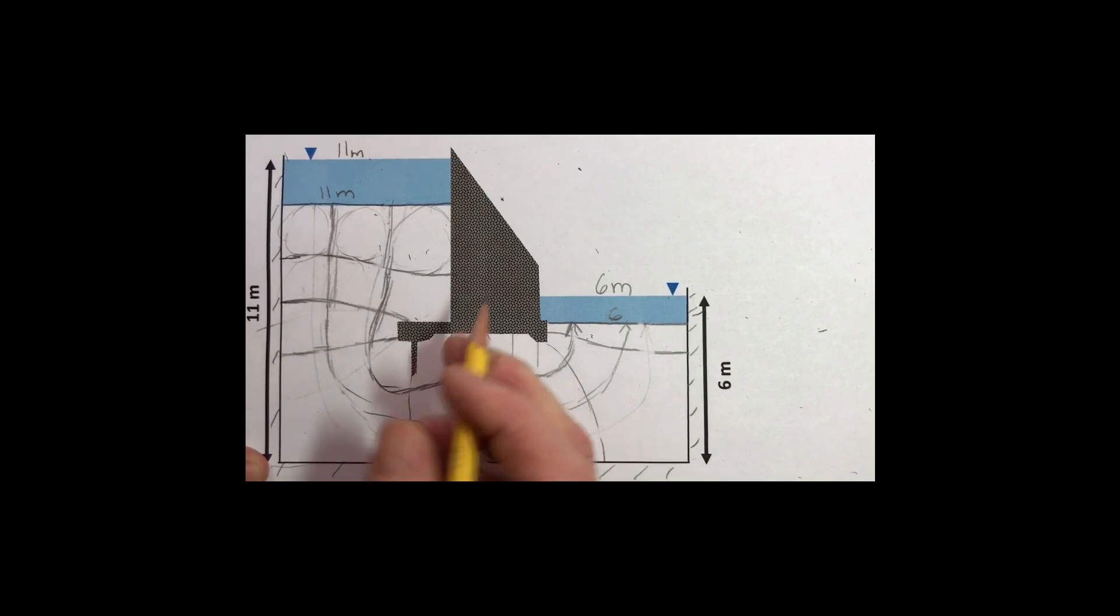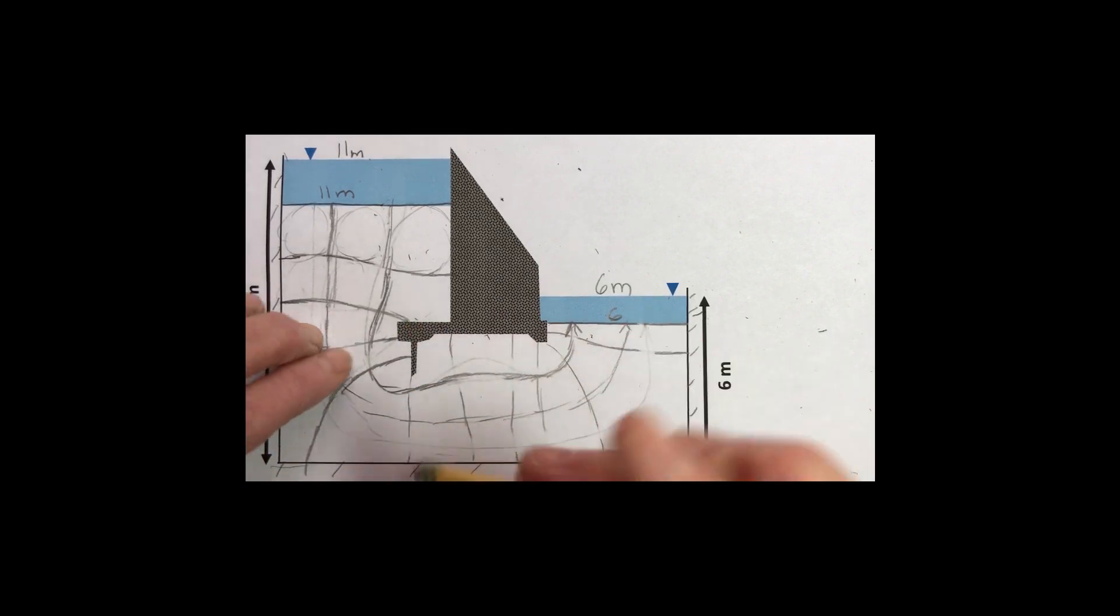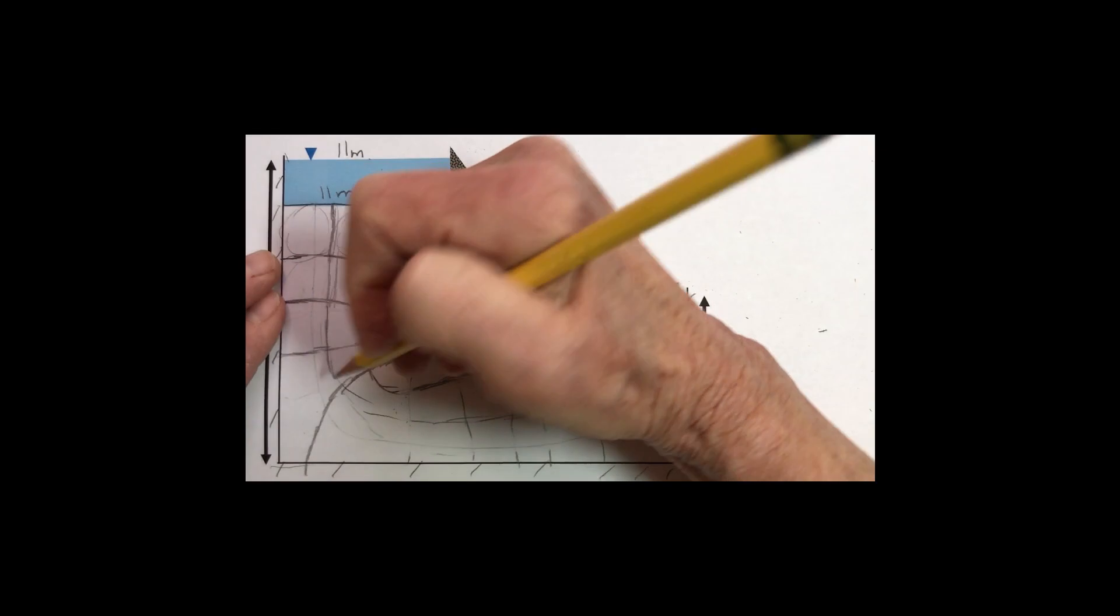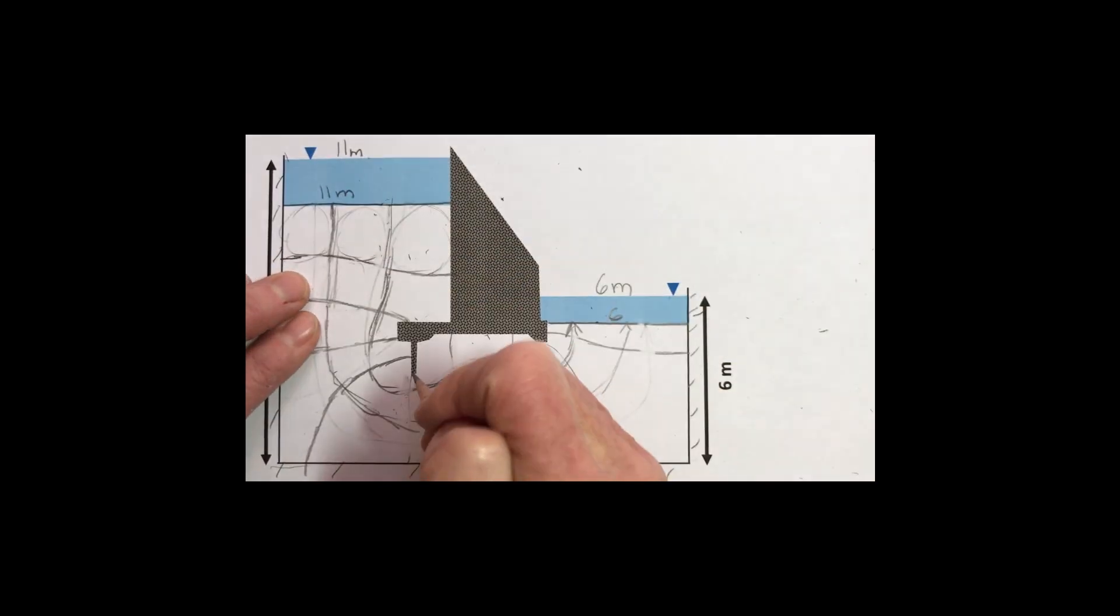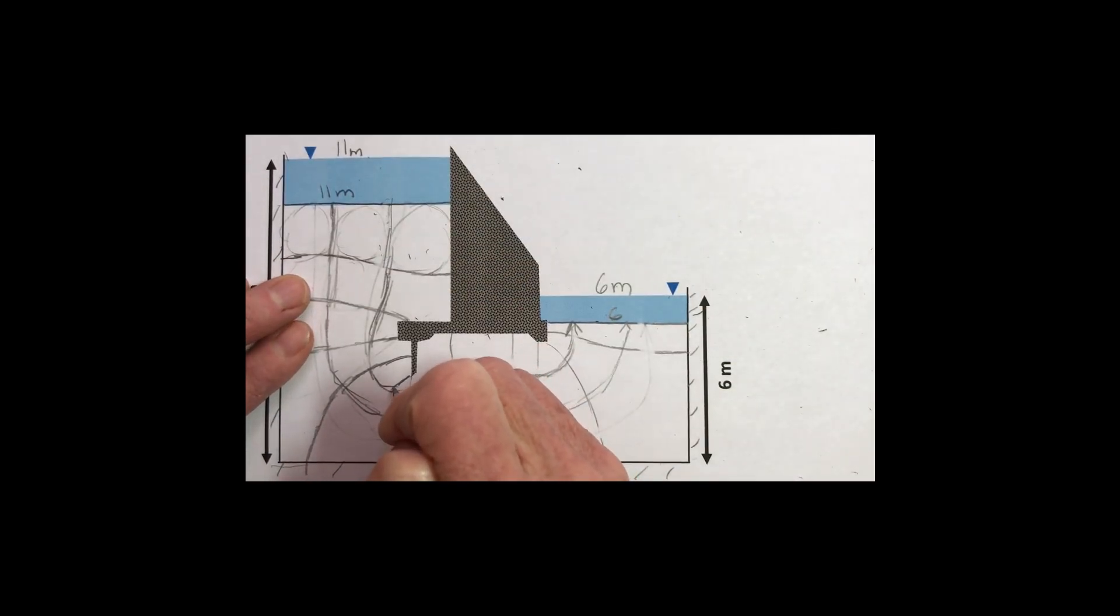Now this is quite oblong. Let me add an extra equipotential line here that we didn't put in before and attempt to make these more square. I'm going to add something in here.